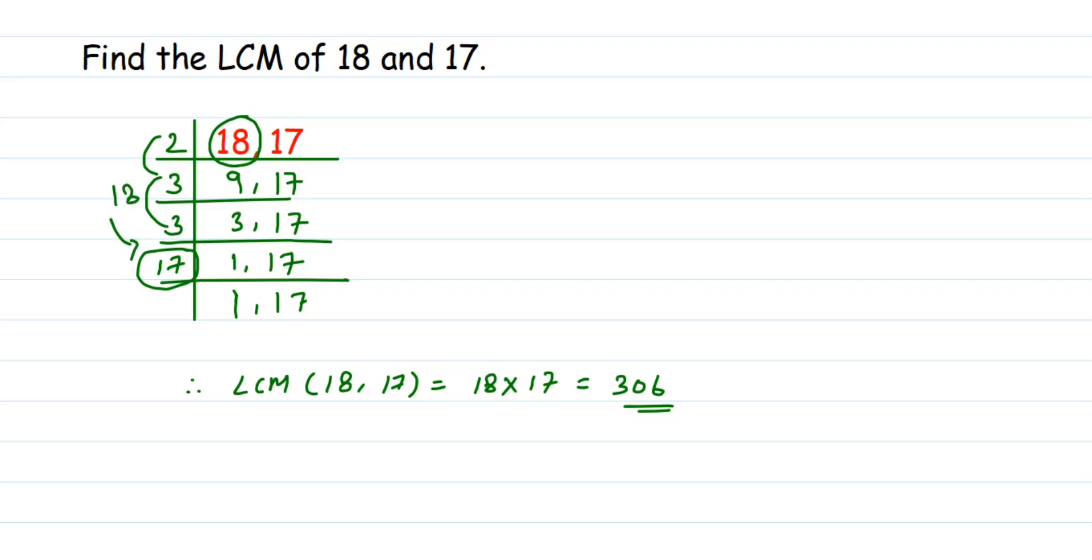So instead of doing all this procedure, and we know that one number is a prime number, so it's better to multiply these two numbers and that will be the LCM. So you have to understand this trick. If you find one number or both the numbers to be prime numbers, the LCM will be the product of those two numbers.